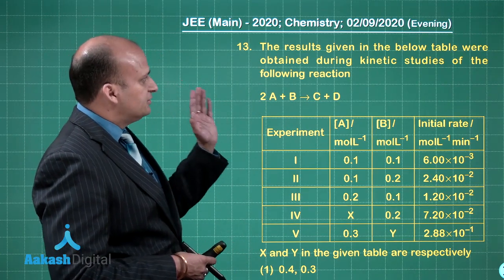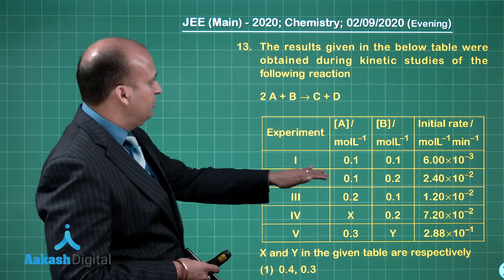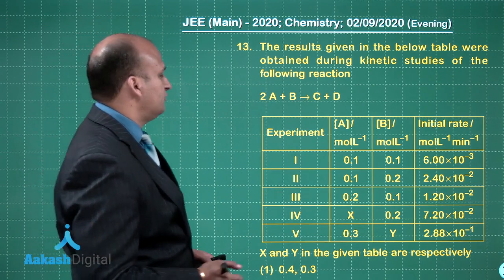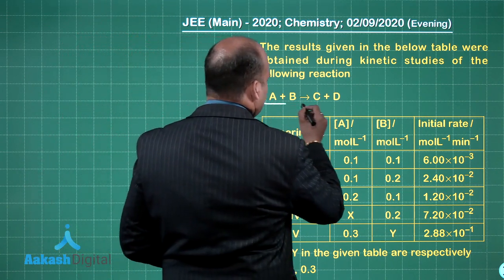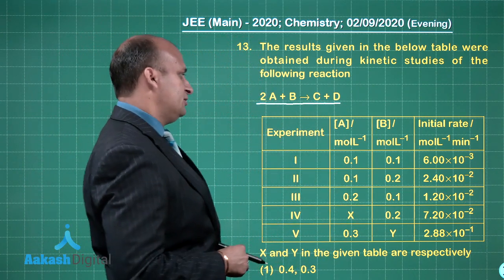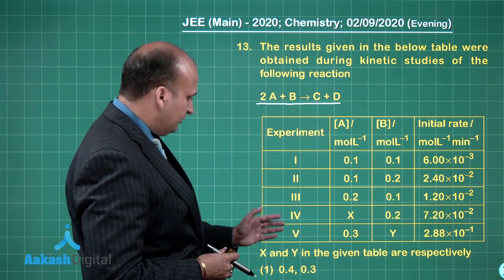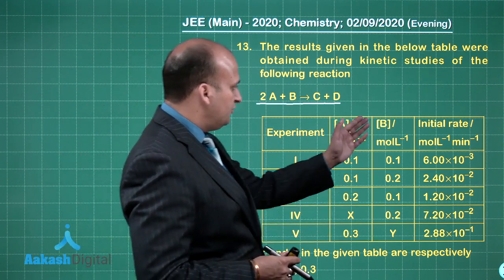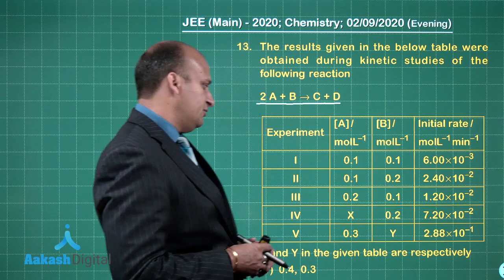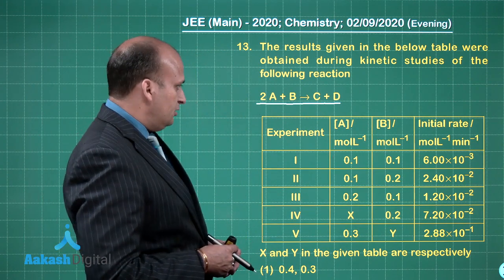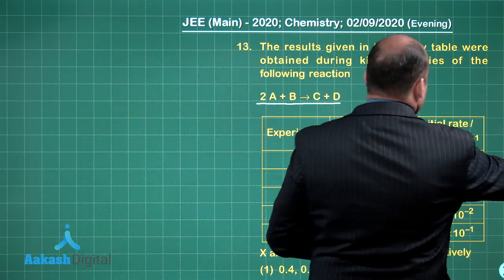The next question: the results given in the below table were obtained during kinetic studies of this reaction: 2A plus B gives C plus D. We have done 5 experiments - concentration of A is given, B is given, and the initial rate is given.